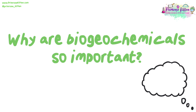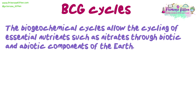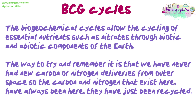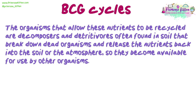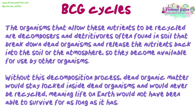Why are biogeochemicals so important? The biogeochemical cycles allow the cycling of essential nutrients such as nitrates through biotic and abiotic components of the earth. We have never had new carbon or nitrogen deliveries from outer space, so the carbon and nitrogen that exist here have always been here and have just been recycled. The organisms that allow these nutrients to be recycled are decomposers and detritivores, often found in soil, that break down dead organisms and release the nutrients back into the soil or the atmosphere so they become available for use by other organisms.